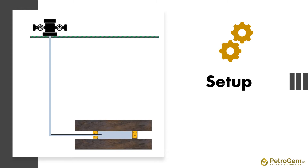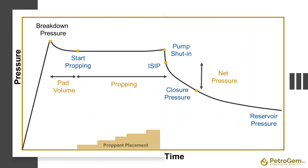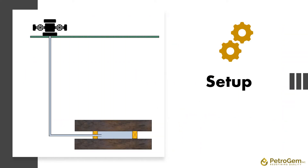Then, pumping is stopped, although recording pressure continues. In massive hydraulic fracturing, the injection rate varies by time, and proppants are also injected along with the fracturing fluid. Fluid pressure is measured throughout the entire test, most likely at the wellhead, and occasionally downhole.